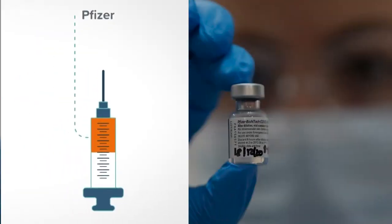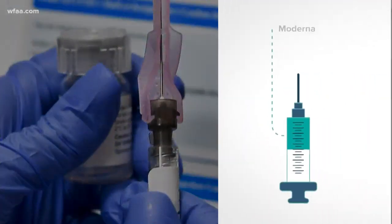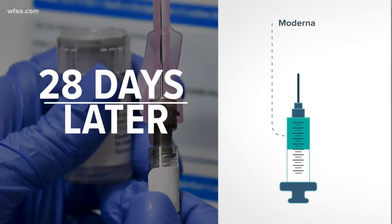Now the differences. Pfizer's vaccine requires your booster shot three weeks or 21 days after the first. Moderna's booster comes four weeks or 28 days later.